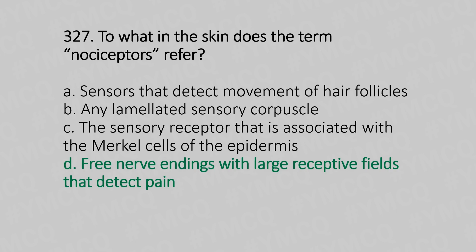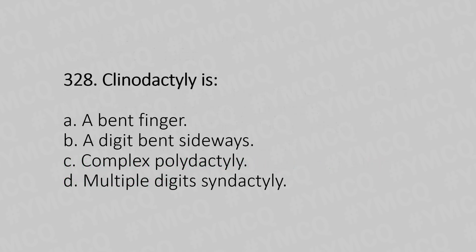Question number 328: Clinodactyly is — option A: a bent finger. Option B: a digit bent sideways. Option C: complex polydactyly. Option D: multiple digit syndactyly. The answer is option B, a digit bent sideways.